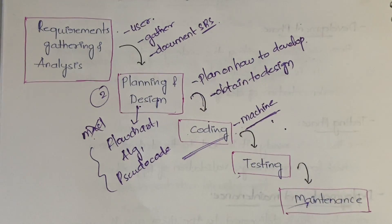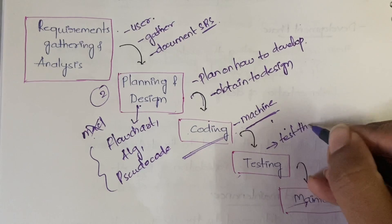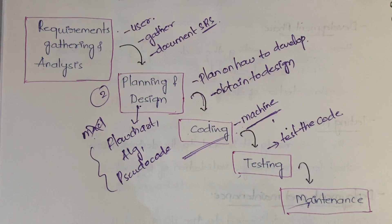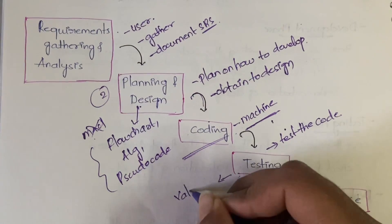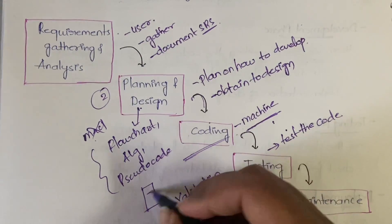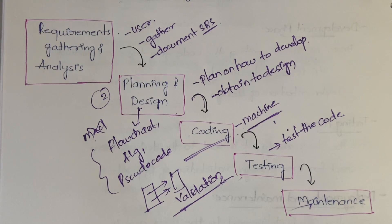After coding we have testing. Here the tester tests the code that has been written. You find all errors, bugs, any issues — identify all those things and send them back to the developers team who will modify it. Apart from that, validation of requirements also happens — you match each requirement given by the user to check whether it is implemented in the project. Testing also focuses on the logical functionality of the system — whether everything is working perfectly component-wise.